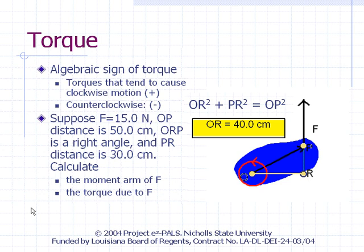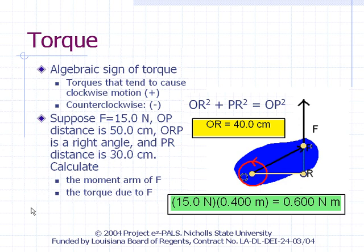The torque is simply the product of F and the moment arm: 15 newtons times 40 centimeters, or 0.4 meters, equals 0.600 newton meters. Since the force shown causes the object to rotate counterclockwise, we assign a negative value to it. The torque then is equal to negative 0.600 newton meters.